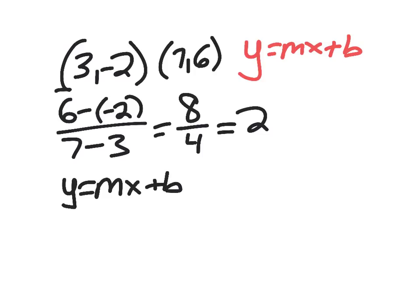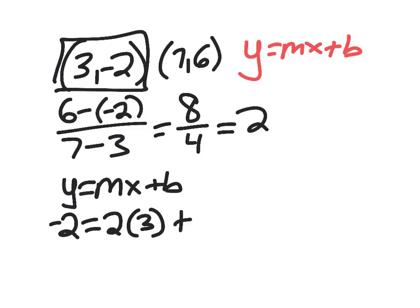So let's say I use this point. So I'm going to have negative 2 as my y coordinate, my slope we just found was 2. My x coordinate is 3, and I don't know my intercept. And I'm just going to solve this. So subtract 6.